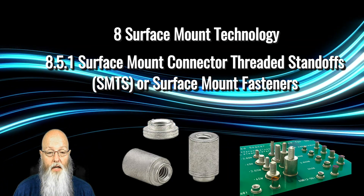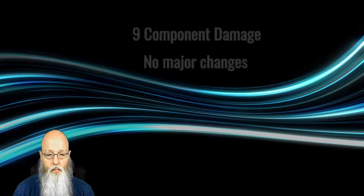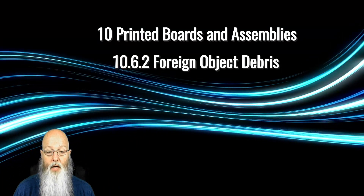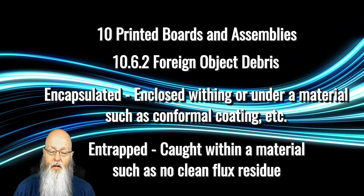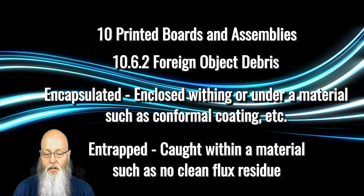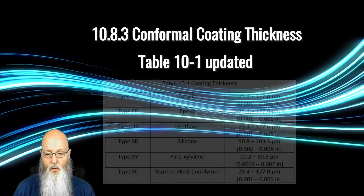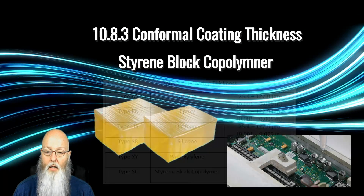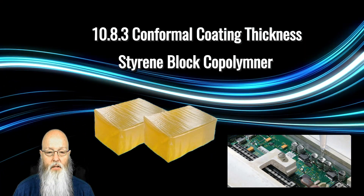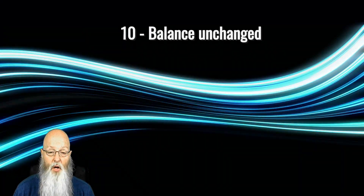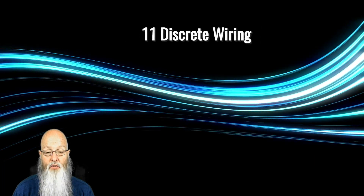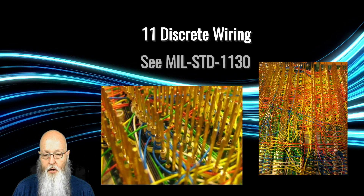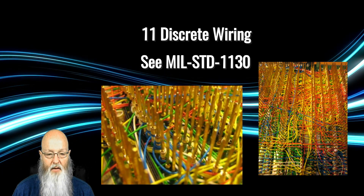Paragraph 9, component damage, had no significant changes. Subparagraph 10.6.2 has added definitions for encapsulated and entrapped — terms that are not new, but the committee has added definitions to clarify them. 10.8.3 has been modified to bring the coating thickness into alignment with other IPC documents and has added Type SC, styrene block copolymer, an elastic coating used for adhesive and environmental protection of assemblies. The rest of paragraph 10 remains unchanged. A change long in coming is the removal of the criteria for solderless wrap; the document user is now referred to MIL-STD 1130 for solderless wrap criteria.